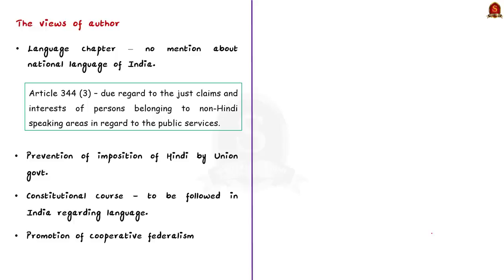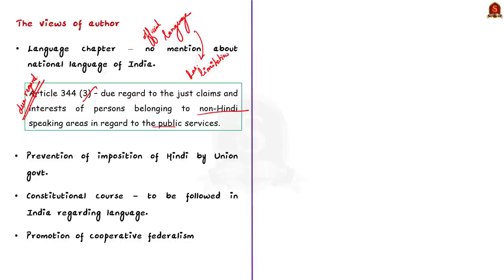The author also says that the language chapter in the Constitution only mentions official language, which is definitive and limited to the languages of the Union — it does not mention a national language of India. Finally, the official language commission, while making recommendations, must give due regard to the interest of persons belonging to non-Hindi speaking areas. The author's view is that the Union government should not impose language over the states, and the constitutional course should be followed with the spirit of cooperative federalism.